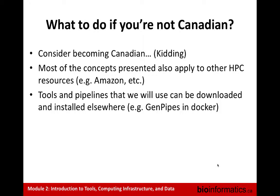Many of you, if you are not Canadian, may not be able to use it. But all these aspects of high performance computing can also be applied to other types of resources like cloud computing. If you are not Canadian and you want to use Amazon, the analysis can be done the same way. We are now working on a version of GenPipes in a container that you can directly use in cloud computing resources, where you will have access to the same software and genomic resources.